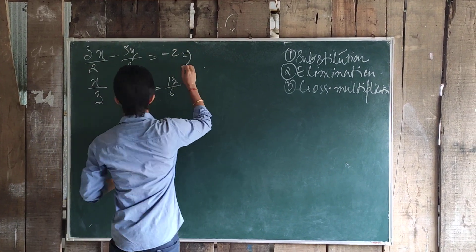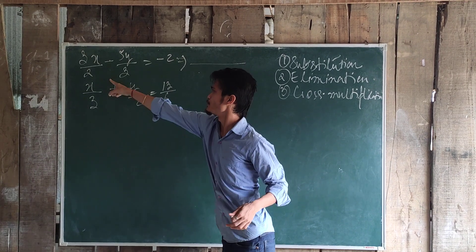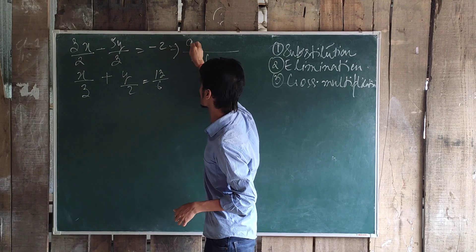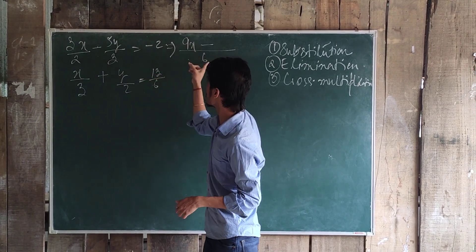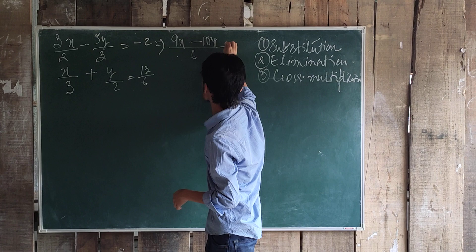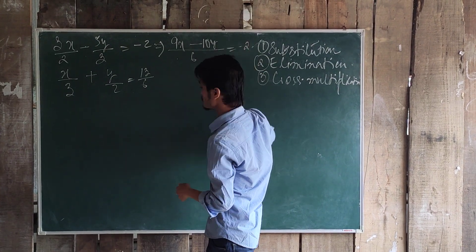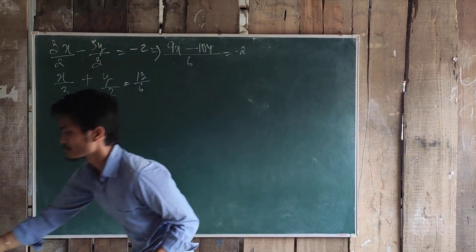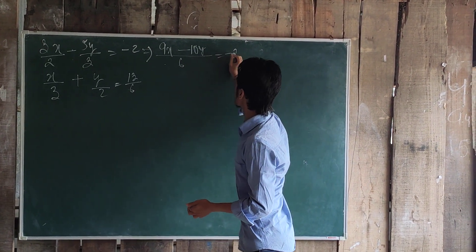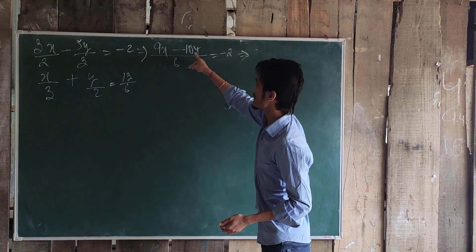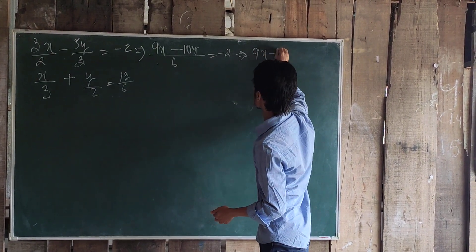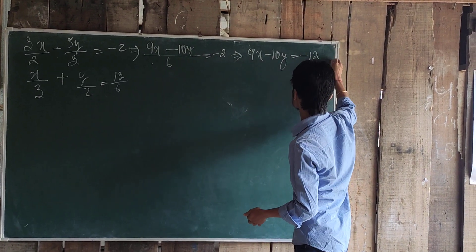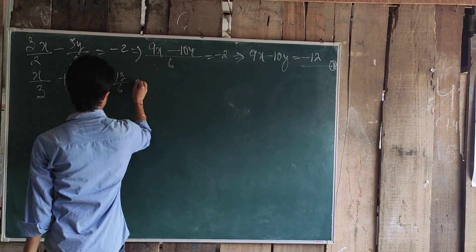How to reconstruct? We are going to take the LCM of 2 and 3, which is 6. Multiplying through, we get 9x minus 10y is equal to minus 12. This is equation 1. Let us reconstruct the second one as well.